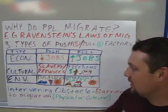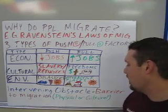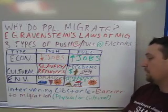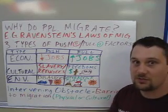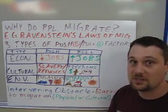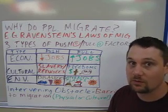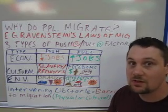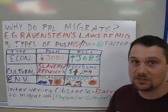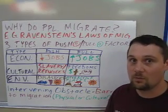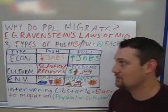Another thing we need to consider are what are called intervening obstacles. Intervening obstacles are barriers to migration. These can be physical — such as mountains, rivers, or oceans — or they can be cultural, like politicians or governments that won't let their people leave for whatever reason.